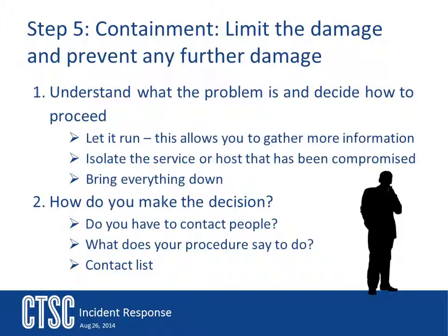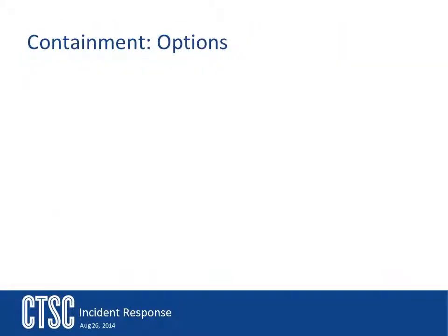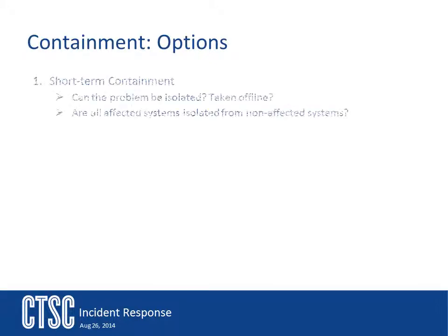The SANS Handbook on Incident Response lays out three steps in incident containment. The first is short-term. This is where you try to limit the damage as much as possible and get things back to a normal state. Short-term fixes are about isolating the problem. Can the system be taken offline? Are there other things you can do to keep the problem contained on the current system? By isolating the affected machine, you're able to protect the rest of your systems and hopefully limit the damage. All short-term containment is attempting to do is limit the damage of the incident. It is an immediate fix for a specific problem and not the long-term solution.